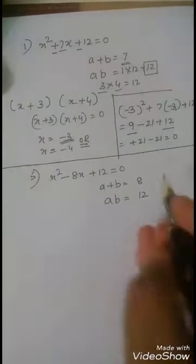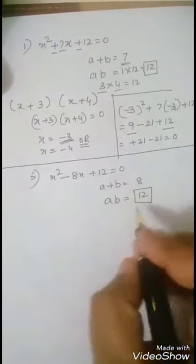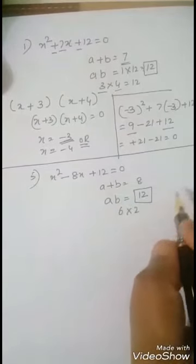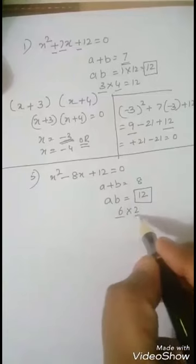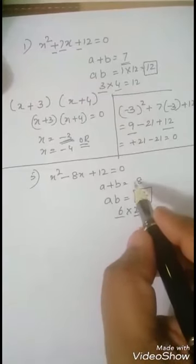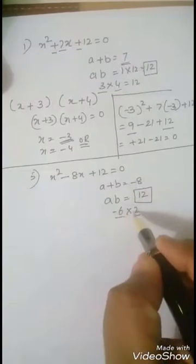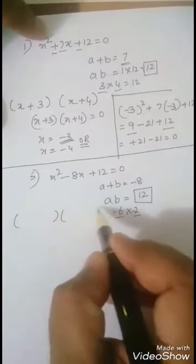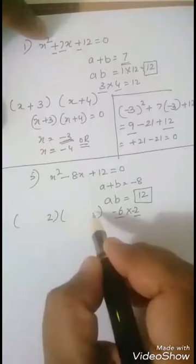What are the factors for 12? 6 × 2 = 12, and 6 + 2 = 8. But we need -8, so -6 and -2.